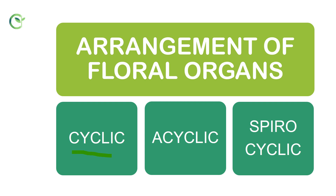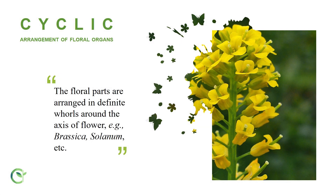In cyclic arrangement, the floral parts — calyx, corolla, androecium, and gynoecium — are arranged in definite whorls in concentric patterns. The arrangement is: calyx on the outside, then corolla, then androecium, and gynoecium at the center. This can be seen in Brassica and Solanum flowers.